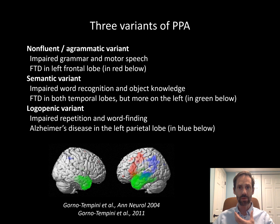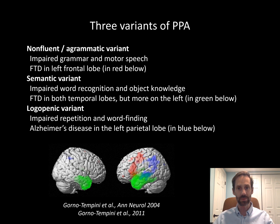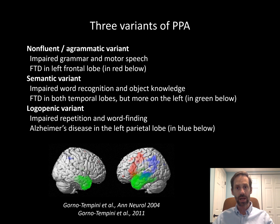Another subtype, the semantic variant or SVPPA, is also a primary progressive aphasia. In this variant, people may be able to speak clearly but have a hard time recognizing sometimes even very simple previously familiar words, and they struggle to come up with names for things they used to know well. As the disease progresses, they may begin to lose knowledge of commonly used objects — for example, one patient confused a toothbrush and a hairbrush, trying to brush their hair with a toothbrush.